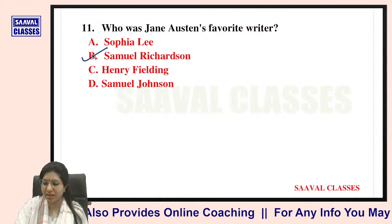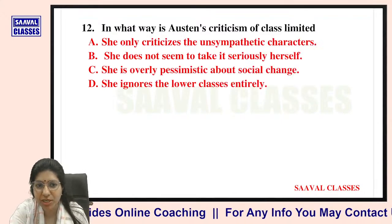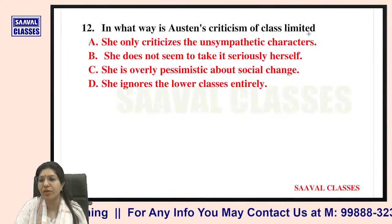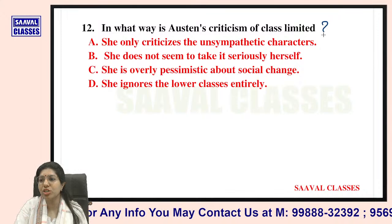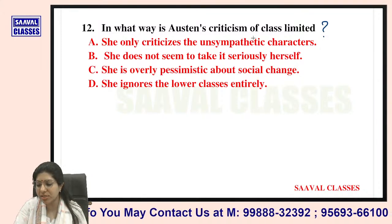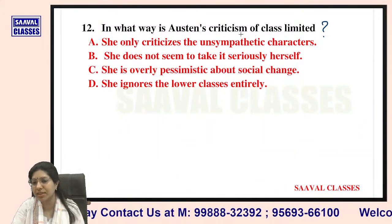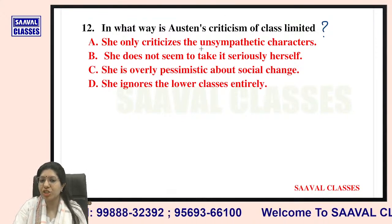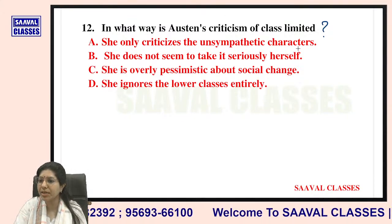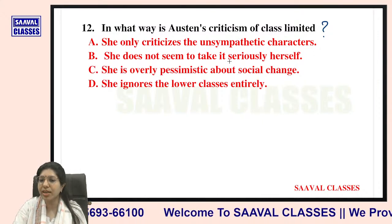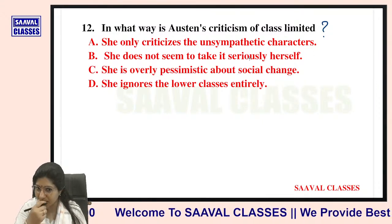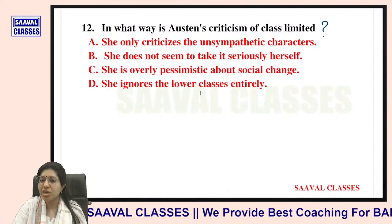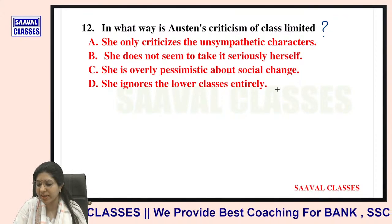The answer is Samuel Richardson. Question number twelve: In what way is Austen's criticism of class limited? Options are: she only criticizes the unsympathetic characters; she does not seem to take it seriously herself; she is overly pessimistic about social change; or she ignores the lower classes entirely.